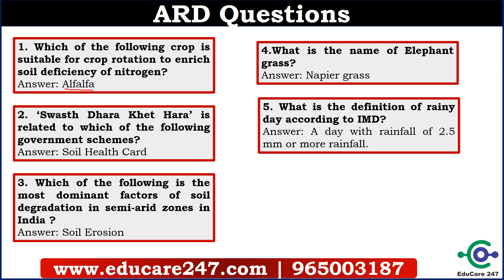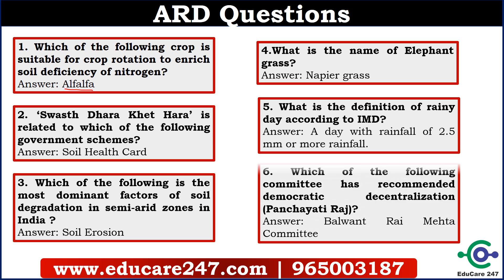The fifth question is: what is the definition of a rainy day according to IMD? The answer is a day with rainfall of 2.5 mm or more. The sixth question is: which of the following committee has recommended democratic decentralization, which means Panchayati Raj? The answer is the Balwant Raya Mehta committee.